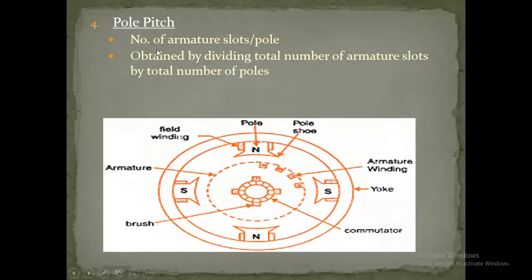Number four: pole pitch. Pole pitch is the number of armature slots per pole. You can see the poles of the field winding: north, south, north, south — these are the main poles. This shape is called the pole shoe because it has a shoe-like shape. The winding placed on the pole is called field winding.